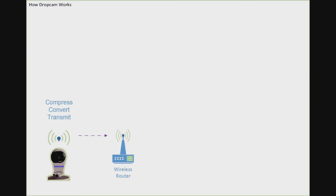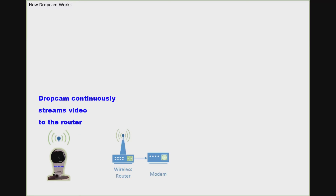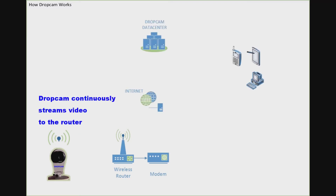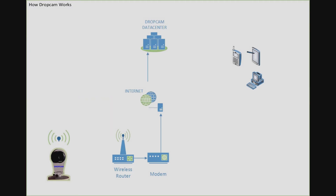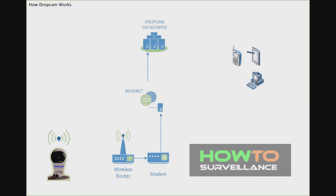The video information is then converted to radio waves and wirelessly transmitted from the DropCam to a wireless router. This video information is then sent from the router to the modem and out to the internet.